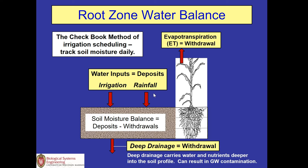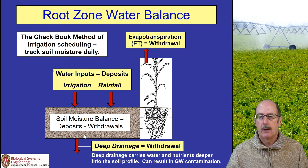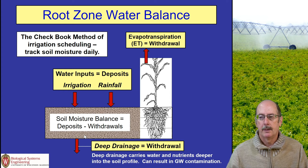When you have excessive rainfall that exceeds the soil water holding capacity, you get what's called deep drainage — a withdrawal or loss. That's where nutrients, pesticides, and other materials are drained through or out of the root zone where they're needed by the plant, and can possibly contaminate groundwater.